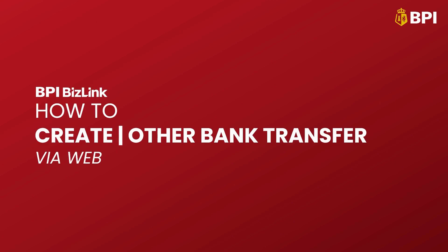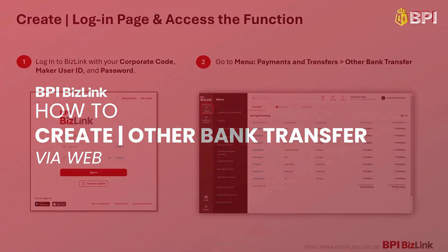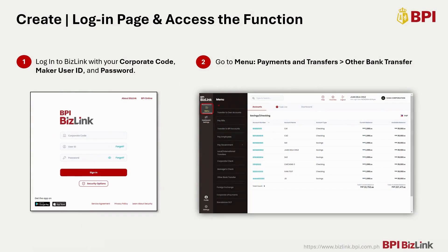How to Create Other Bank Transfer Transaction via Web. Log in to BizLink with your corporate code, maker user ID, and password. Once logged in, go to Menu, Payments and Transfers, then click Other Bank Transfer.